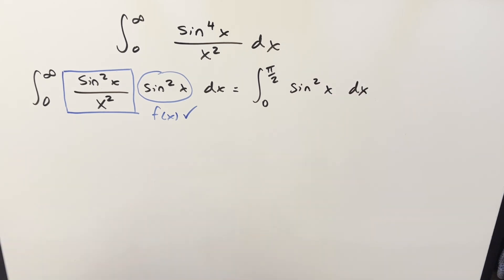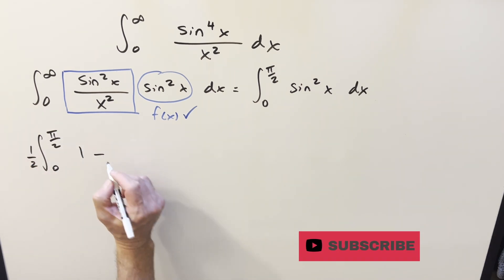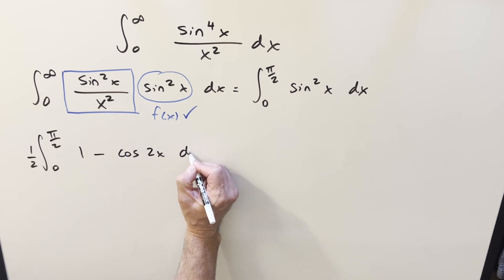So on this right here, we'll just use our power reduction and rewrite this. So I'll bring one half in front, and then for our formula on this, I can write this as one minus cosine 2x dx.